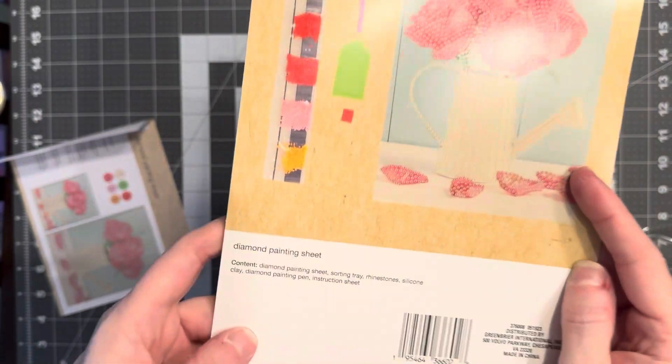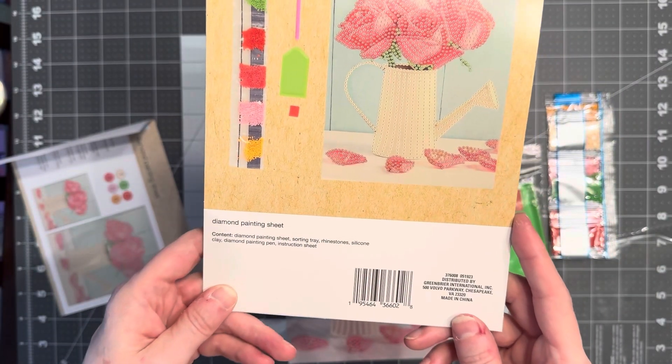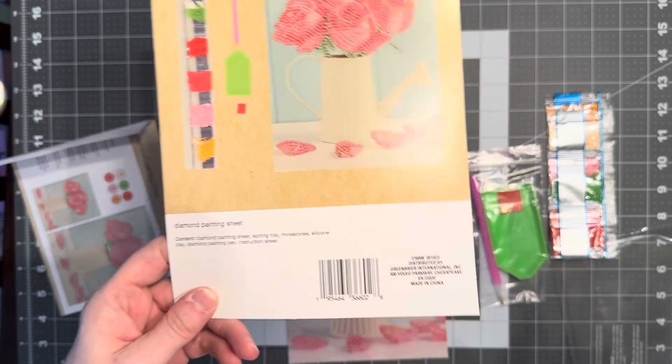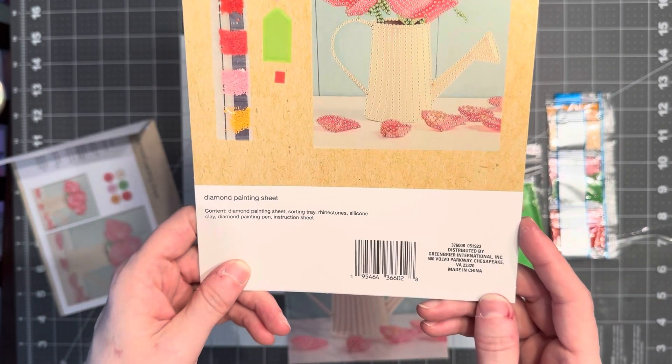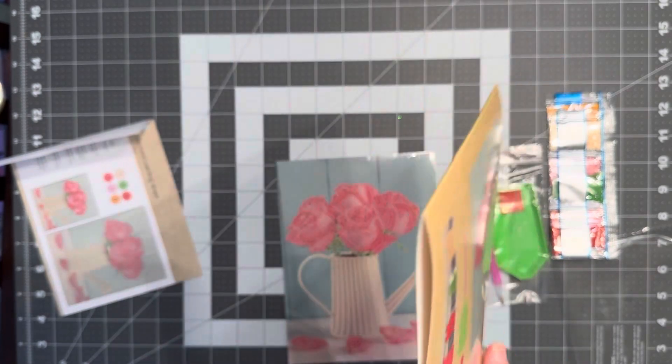So you get the contents of your kit, which are the diamond painting sheet, sorting tray, rhinestones, which are actually drills, silicone clay, which is the wax, diamond painting pen, and instruction sheet.